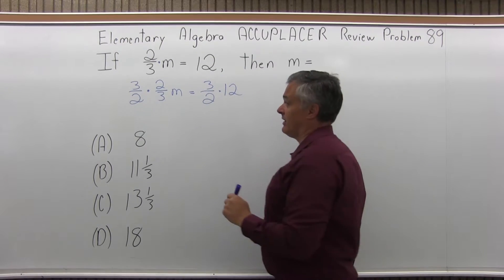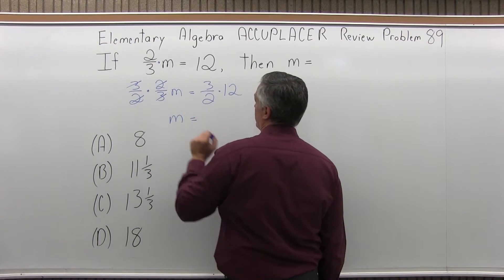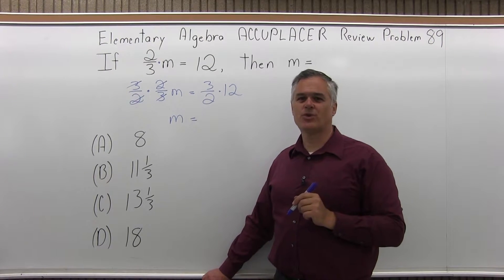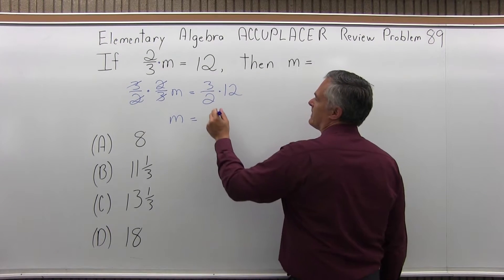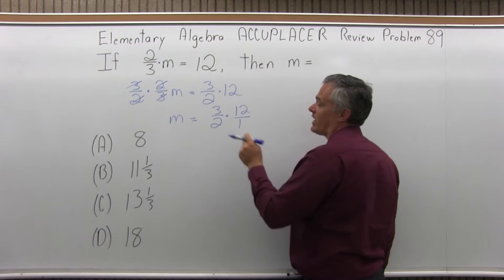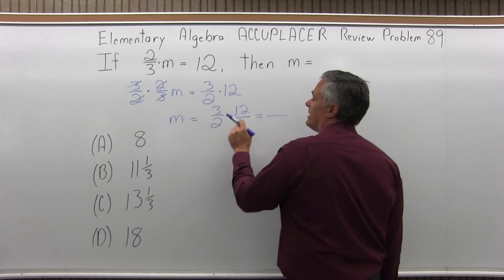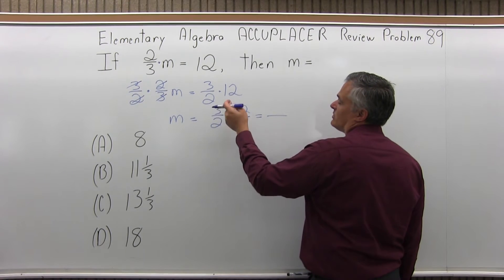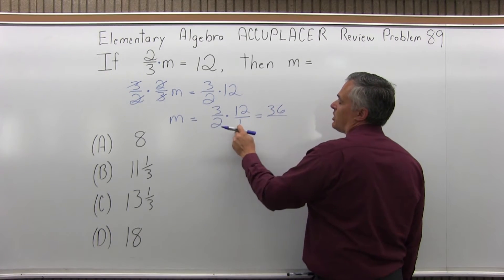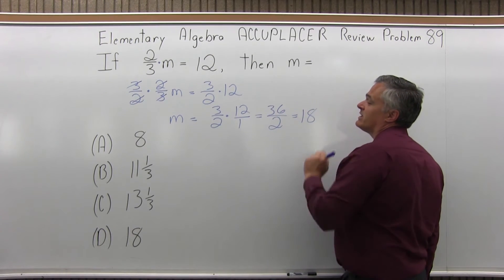So now, on the left, the threes cancel, the twos cancel — I just have m, which is what I wanted. And now I have three over two times twelve on the right. You're really multiplying fractions — think of the twelve as twelve over one. Top times top: three times twelve is thirty-six. Bottom times bottom: two times one is two. Thirty-six over two reduces very nicely to eighteen.